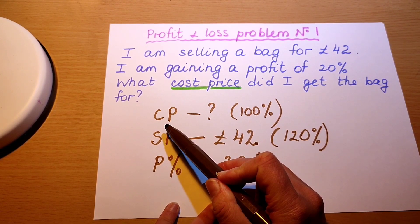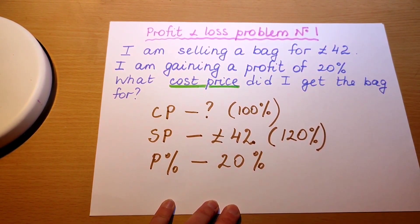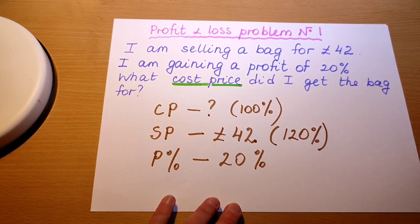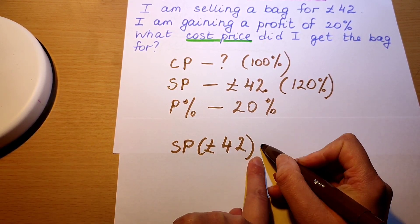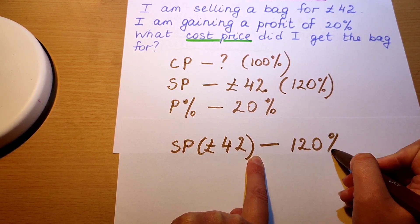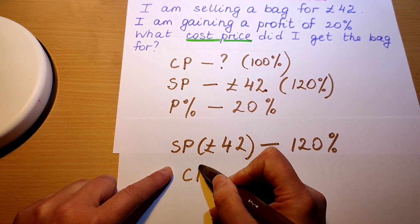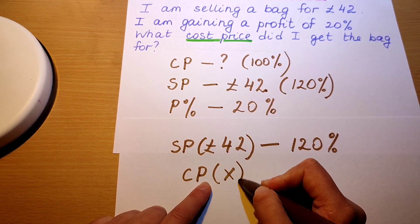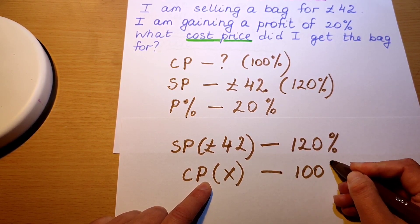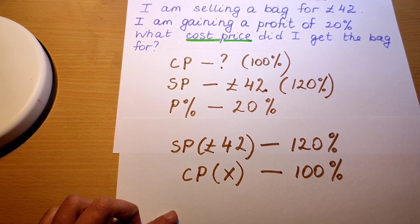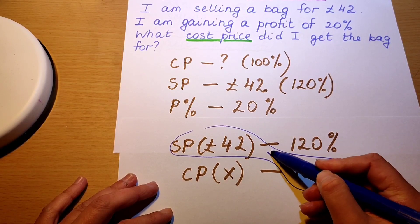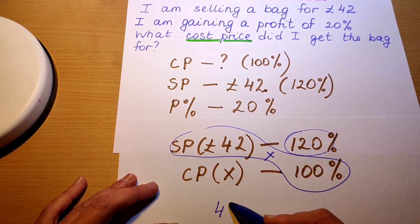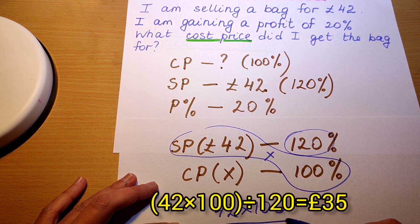So we're looking for the cost price. Let's use the cross multiplication and division method. Selling price 42 pounds relates to 120 percent, the same way as cost price — which we don't know, so we put x — relates to 100 percent, because cost price is always 100 percent. We cross multiply numbers diagonally and divide by whatever is left: 42 multiplied by 100, divided by 120, is 35 pounds.